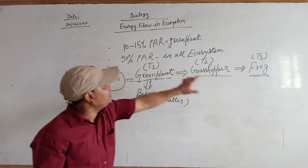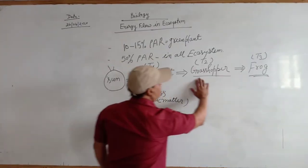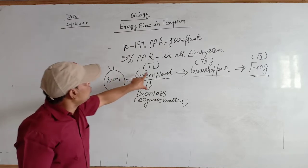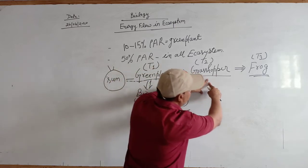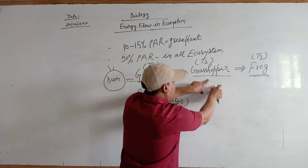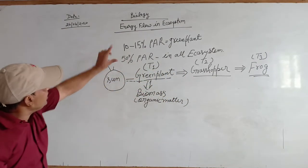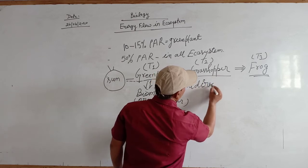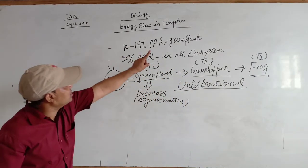In all ecosystems, the flow of energy takes place through the various steps of the trophic levels. The Sun provides energy to green plants, green plants transfer it to grasshoppers, and grasshoppers to frogs. In any ecosystem, energy cannot be transferred backward — from the third trophic level to the second, or the second to the first. Therefore, the flow of energy in an ecosystem is always unidirectional.